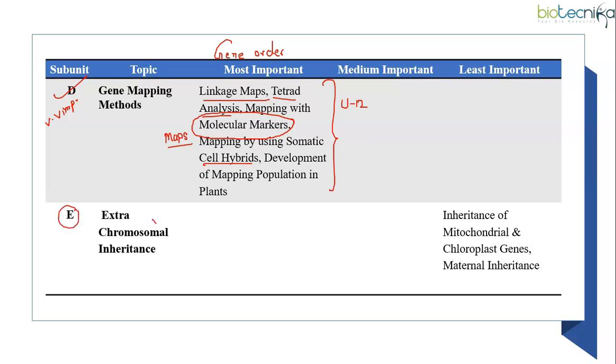Unit E that is about extra chromosomal inheritance is an easy subunit in comparison to other subunits from unit 8. Here you study about maternal inheritance, maternal effect, cytoplasmic male sterility. Now from this particular subunit only examples are important. You need to focus on the examples of maternal inheritance, maternal effect. So if you want, you can skip this particular subunit. As you can see, this particular subunit covers topics which are least important.